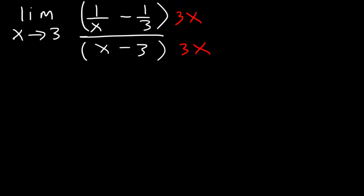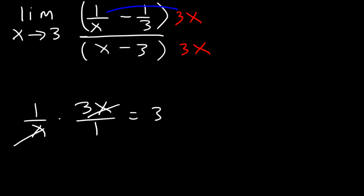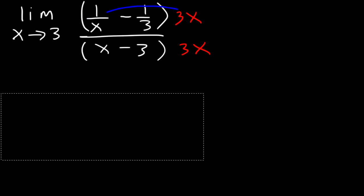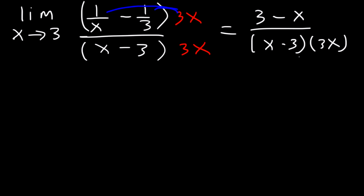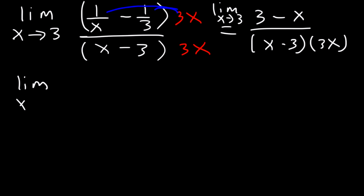Let's distribute. 3x times 1 over x equals 3 — the x's cancel, leaving 3. Then 3x times 1 over 3: the 3s cancel, leaving x. We're not going to distribute the 3x on the bottom — we'll leave it in factored form. So on top we have 3 minus x. Now, 3 minus x is similar to x minus 3 but not the same, so we need to factor out negative 1 as the GCF.